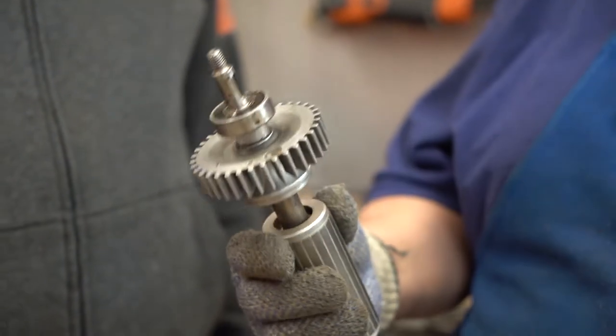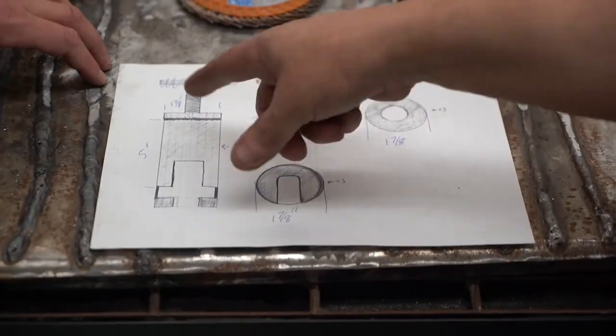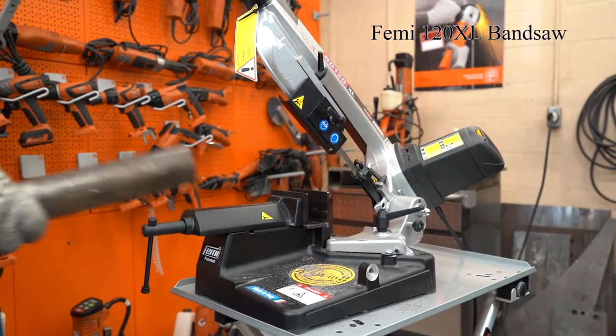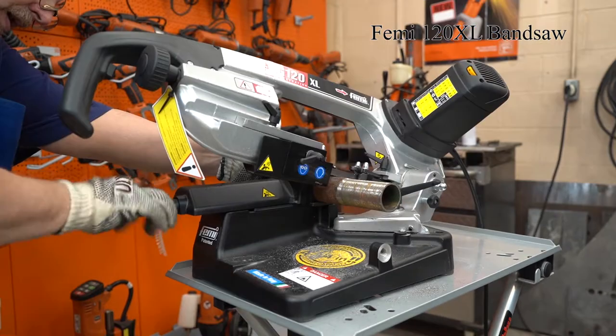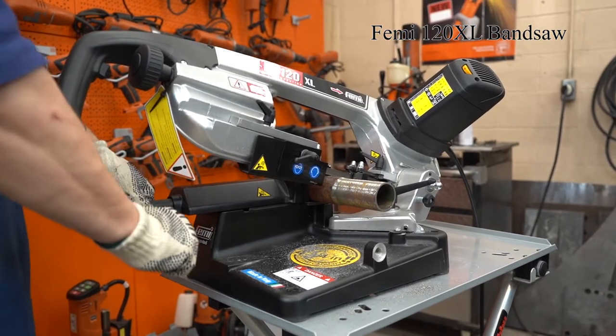I think I can work something out and be able to make a puller to get that off. What I thought we could do is take some 1-7-8 inch tubing and I'll cut it with the Femi 120XL bandsaw which is super accurate.